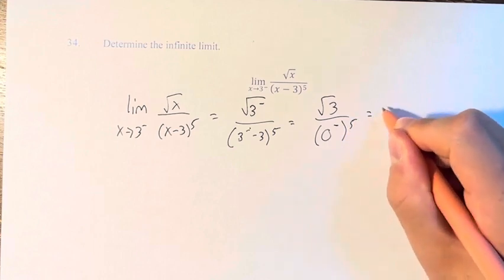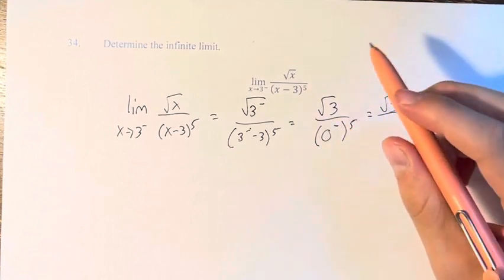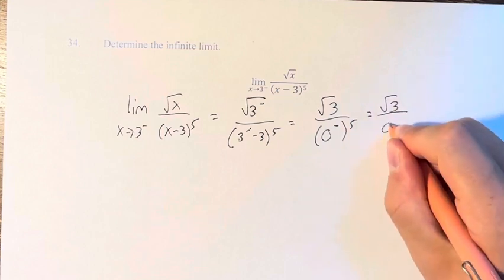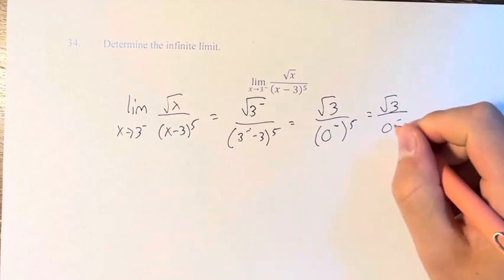This is to the 5th power. A negative number to the 5th power is still just a negative number, we're still just approaching 0 from the negative side.